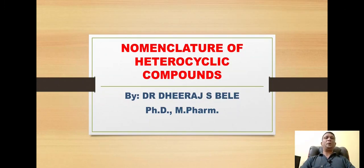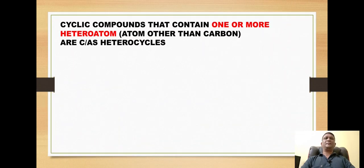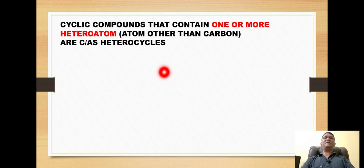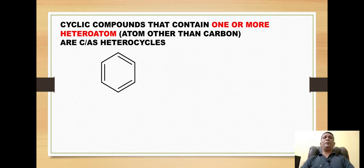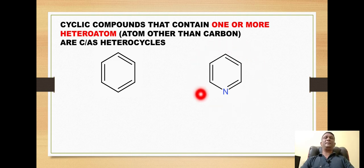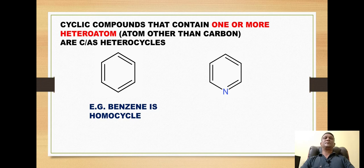Hello dear students. Today's topic is nomenclature of heterocyclic compounds. Heterocycles are cyclic compounds which contain one or more heteroatoms. The heteroatom simply means any atom other than carbon. For example, if we look at this six-membered ring consisting of carbons only, it is an example of a homocycle. But if we look at this ring with one nitrogen and five carbon atoms, it represents a heterocyclic ring.